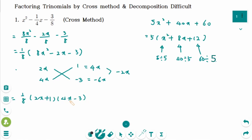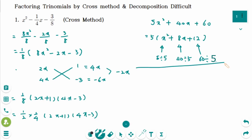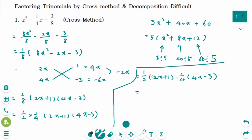But we are not done yet. So 1 over 8 is 1 over 2 times 1 over 4. And then change the position. So 1 over 2 times (2x plus 1) times 1 over 4 times (4x minus 3). Then expand like this: x plus 1 over 2, then x minus 3 quarters. This is the final factored form.